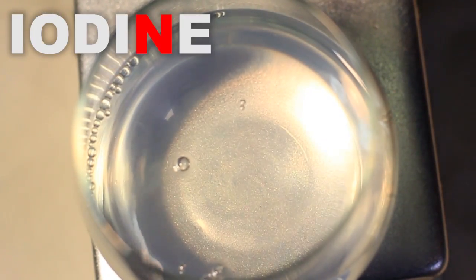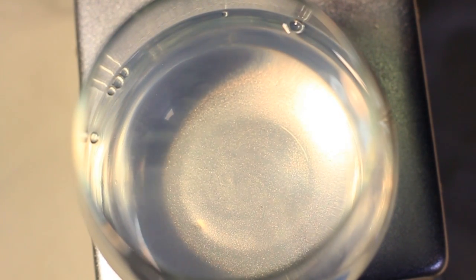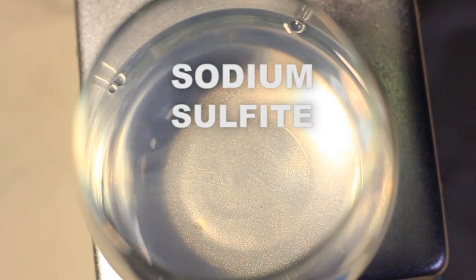Then, the iodine turns back into iodide and the process repeats over and over again like a time loop until all of the sulfite is used up.